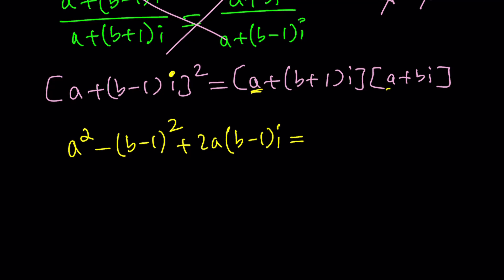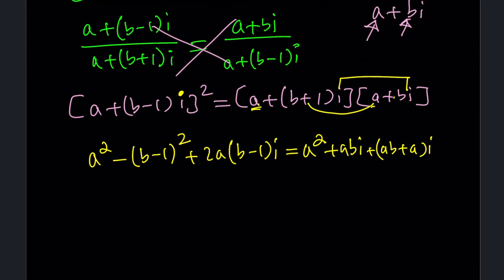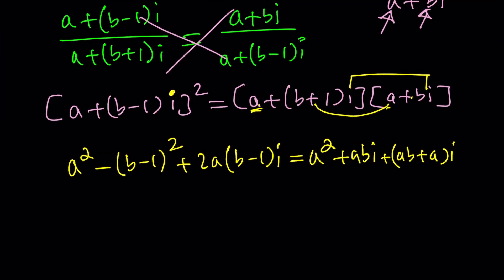On the right-hand side, we have a times a, which is a squared. Then a is distributed over the bi, which is abi. This is distributed over the a, which is ab plus a multiplied by i. And finally, i squared gives us negative 1. So we write this as minus b times b plus 1. Let me move this stuff to the left so it doesn't cut off. Sometimes when I edit these videos, stuff will be cut off. I want to make sure it's the right way.